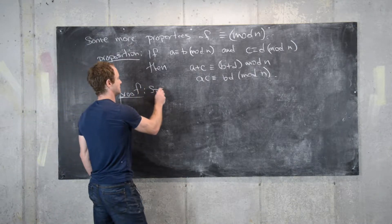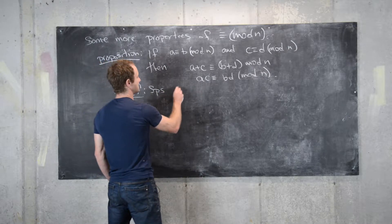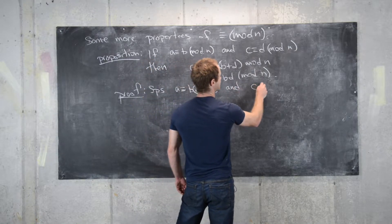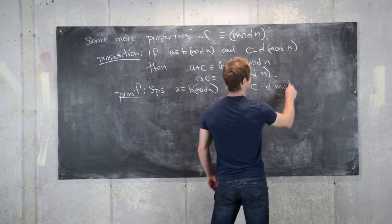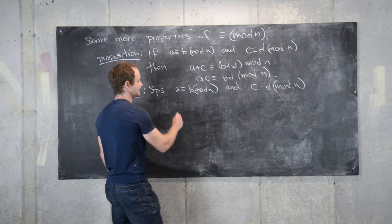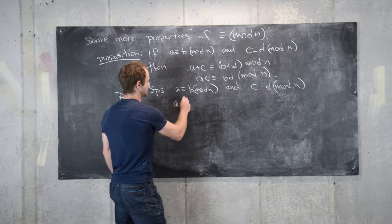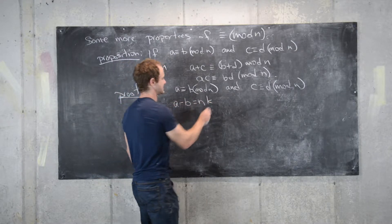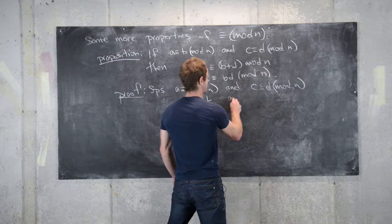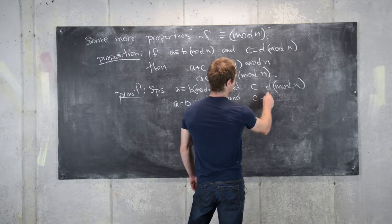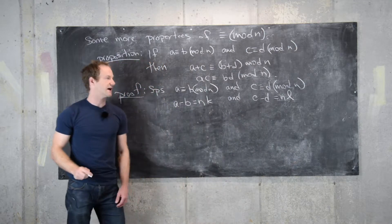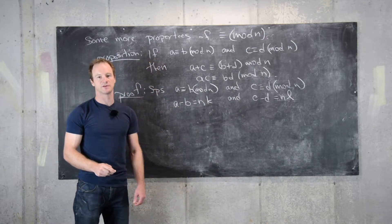Let's suppose that a is congruent to b mod n, and c is congruent to d mod n. That means that a minus b equals n times k — in other words, n divides a minus b, or a minus b is a multiple of n. And c minus d is equal to n times l — in other words, n divides c minus d, or c minus d is a multiple of n.